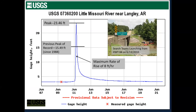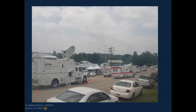This is the USGS stream gauge downstream at Langley, Arkansas, quite a ways downstream where the valleys are not as steep as up at the campground. This shows rescue personnel in Zodiac boats still looking for people. I was down there within 48 hours of the devastation, and they were still looking for bodies. The rate of rise at the gauging station was about eight feet per hour, and we estimate it was even greater up at the campground area where people were killed.